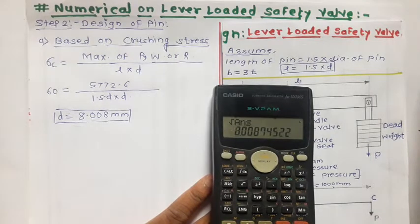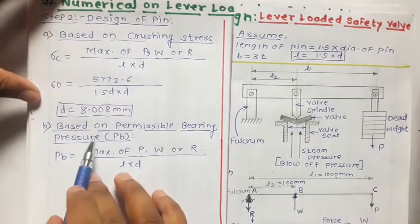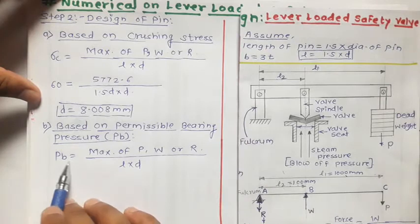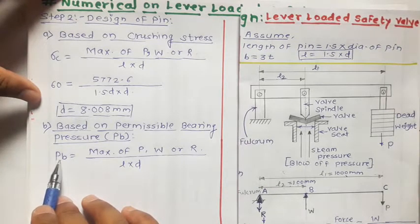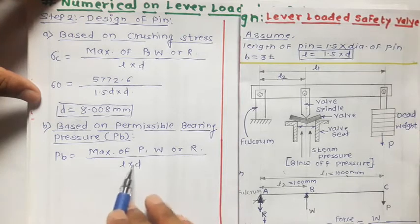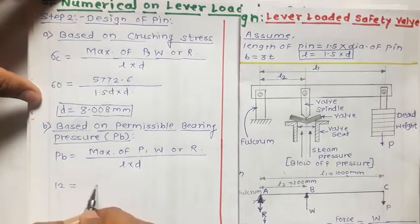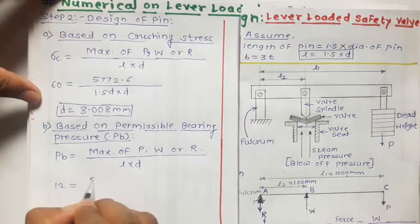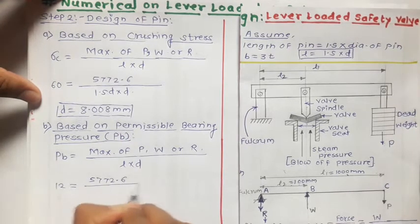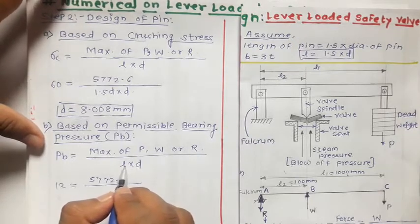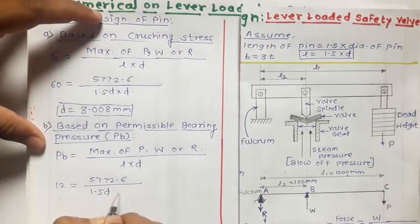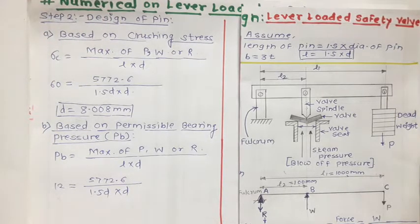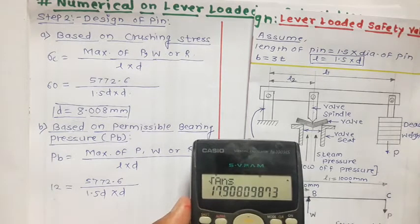Now let us find the diameter of pin based on permissible bearing pressure Pb. The formula is Pb equal to maximum of Pw or R divided by L into D. The value of Pb is given as 12 MPa, and the maximum of PwR determined from step 1 is 5772.6. Since there are two unknowns in the denominator, we substitute L = 1.5D as given in the problem statement.